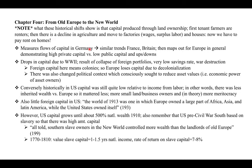He measures capital flows in Germany and other European countries, observing similar trends to France and Britain — demonstrating high private capital versus low public capital — and revisits drops in capital due to World War II. Regarding the U.S. case, historically capital was still quite low relative to income from labor. There was less inherited wealth compared to Europe, so it mattered less, with more small land or business owners and in theory more meritocracy.